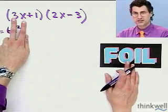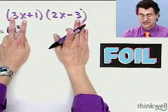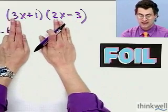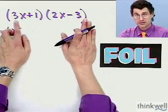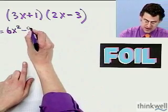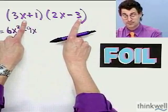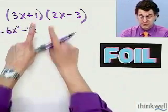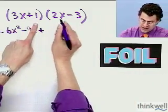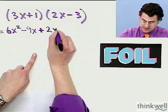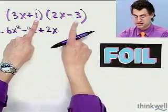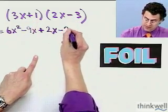Then I do the outside terms. So I multiply this by this, the two outside terms. I did the first terms together, now I do the outside terms. That gives me a net gain of minus 9x, because 3x times minus 3 is minus 9x. Then I do the inside terms. So I add 1 times 2x, which is just 2x. And the last terms, which is minus 3 times 1, which is negative 3.